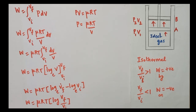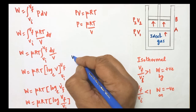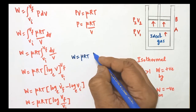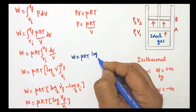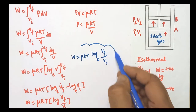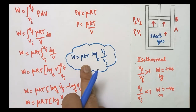The final expression for work done in an isothermal process is: W = μRT log base e (VF / VI). This formula is very important and can be used to solve problems, whether it involves isothermal expansion or isothermal compression.